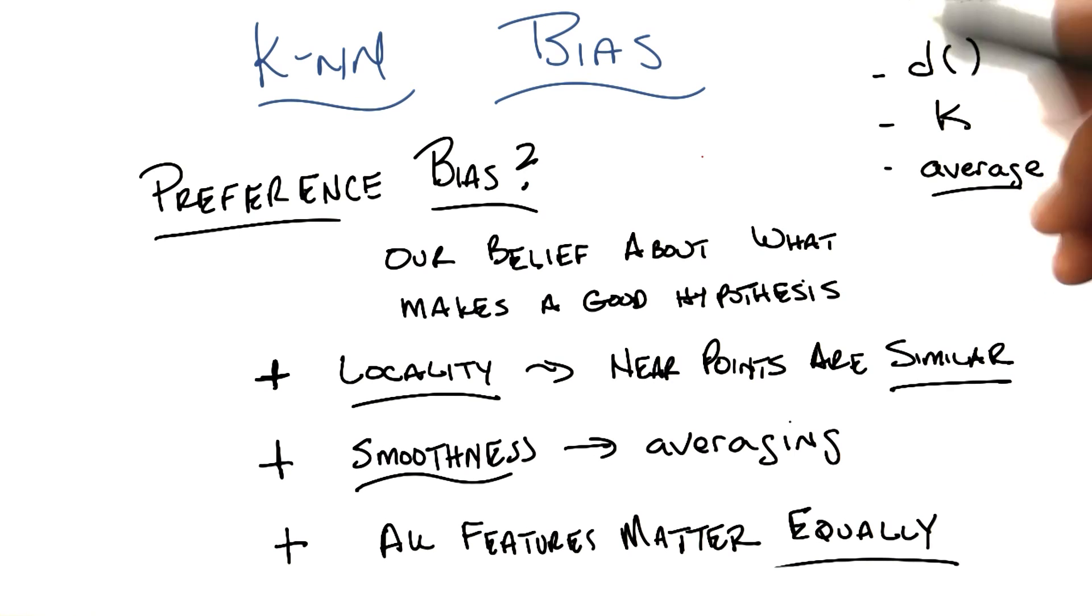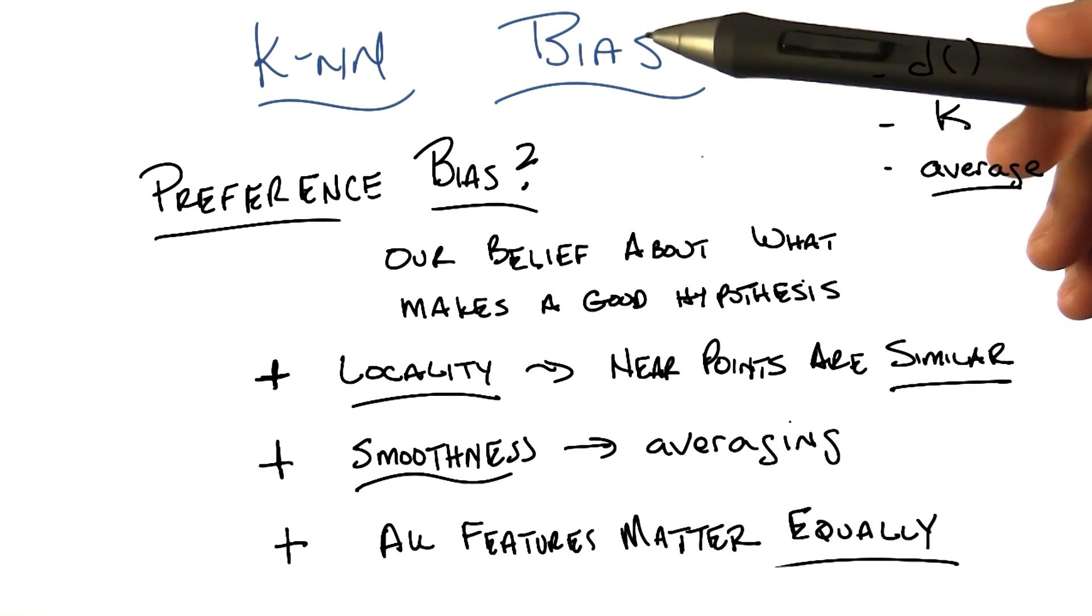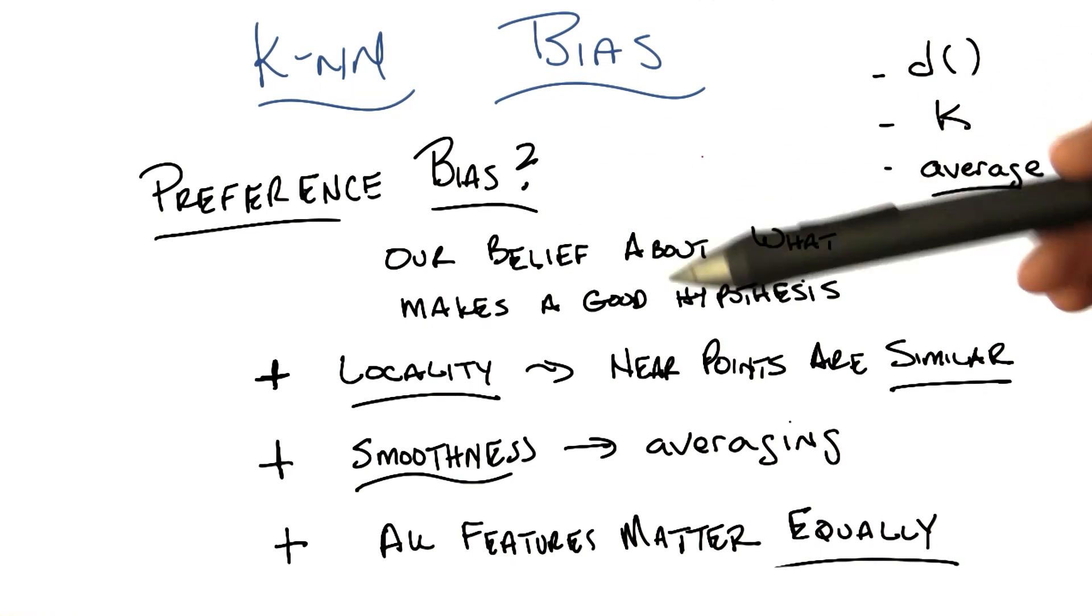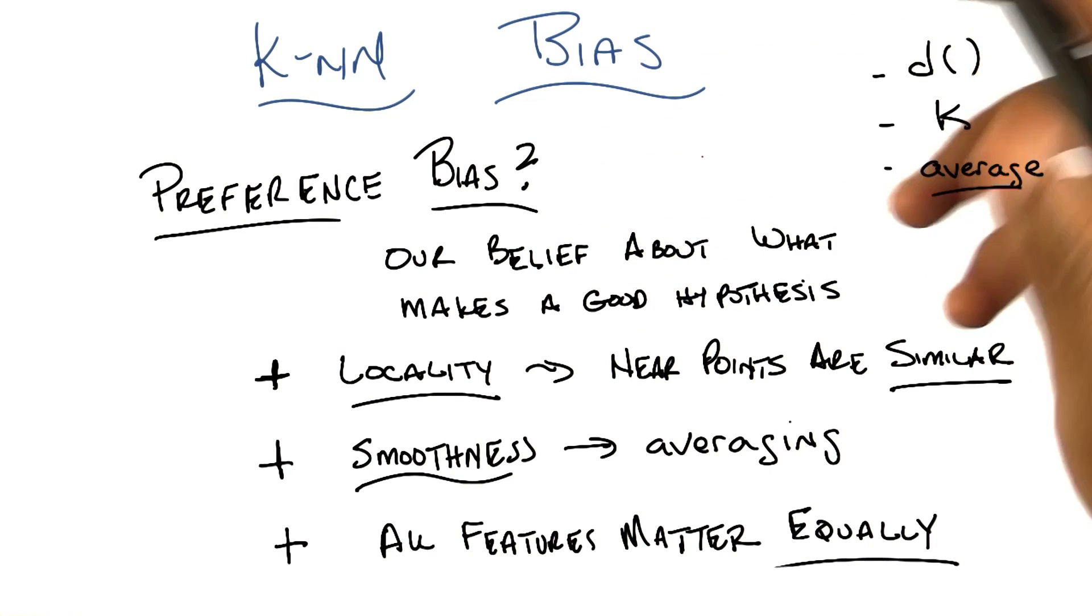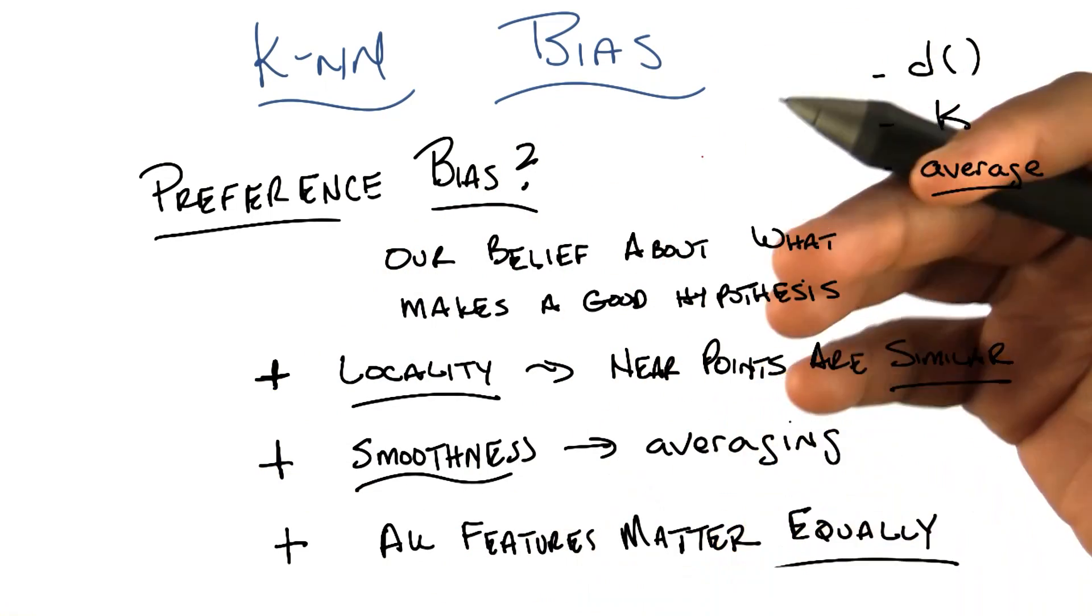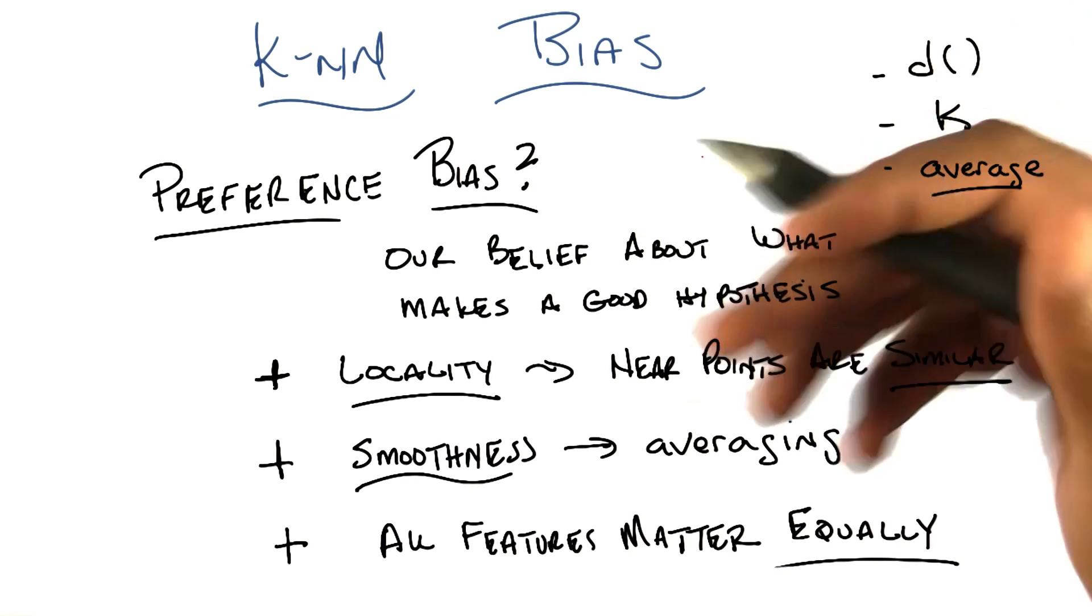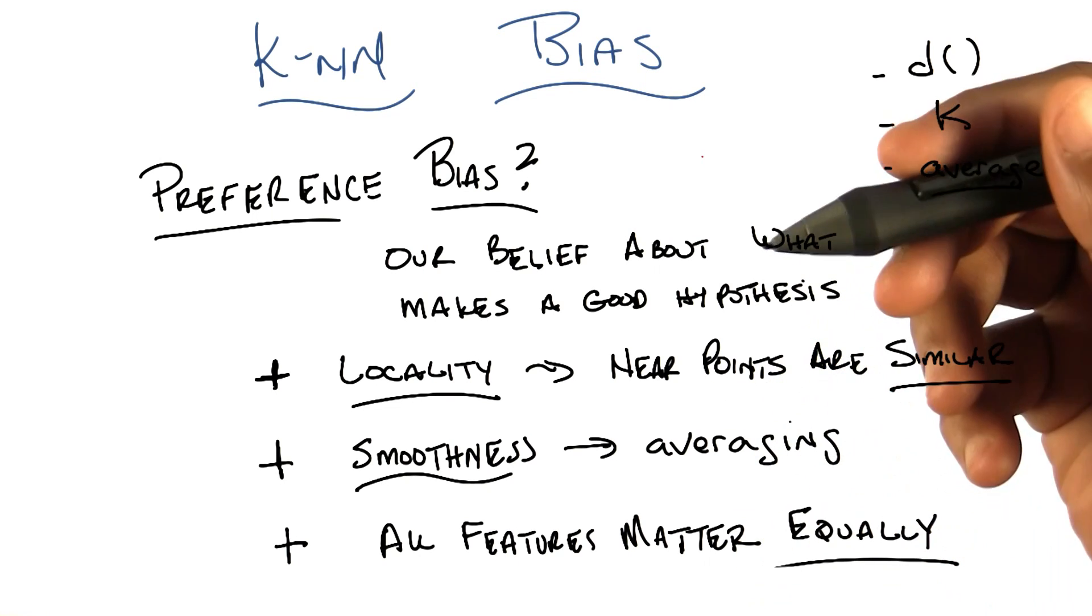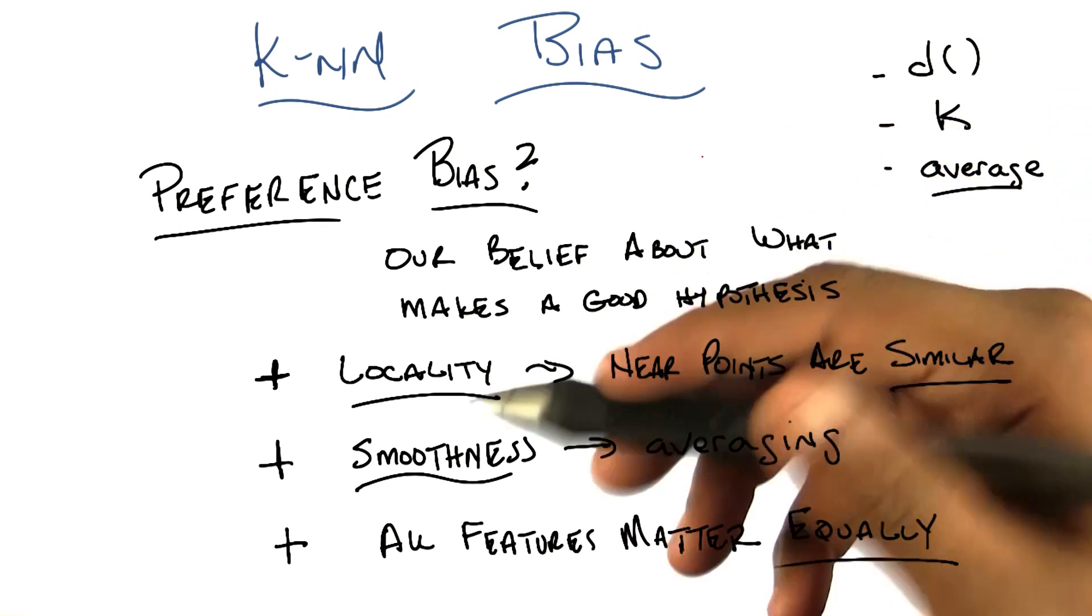So let me remind you what preference bias is. Preference bias is kind of our notion of why we would prefer one hypothesis over another, say all things, other things being equal. And what that really means is it's the thing that encompasses our belief about what makes a good hypothesis. So in some of the previous examples that we've used, it was things like shorter trees, smoother functions, simpler functions, Occam's razor. Those sorts of things were the ways that we expressed our preferences over various hypotheses.